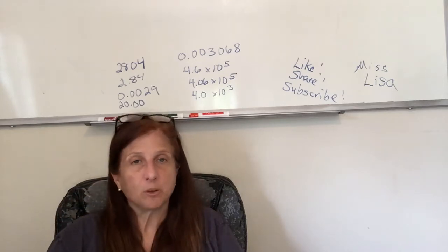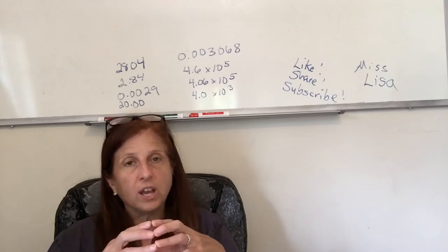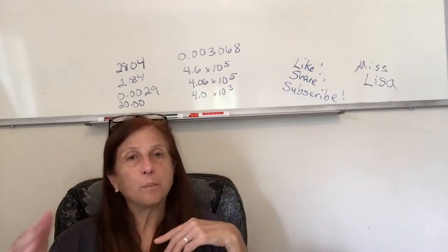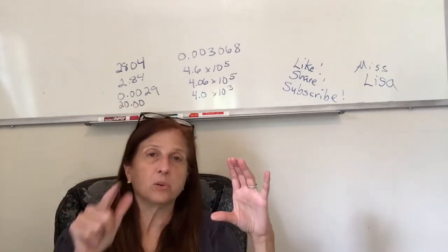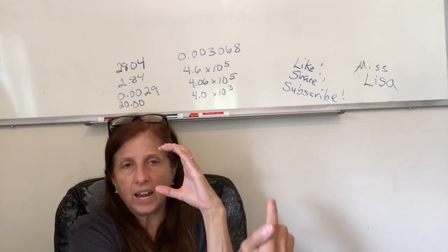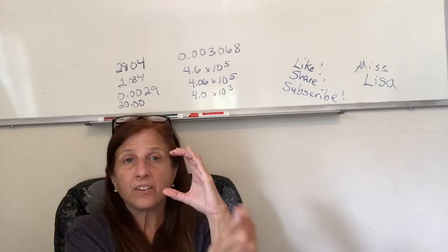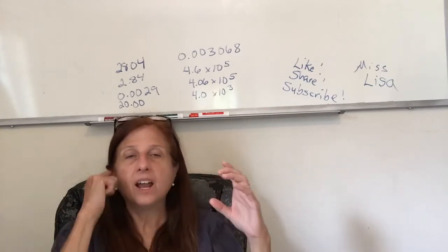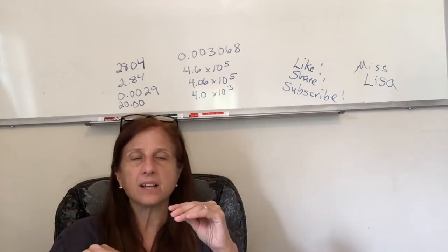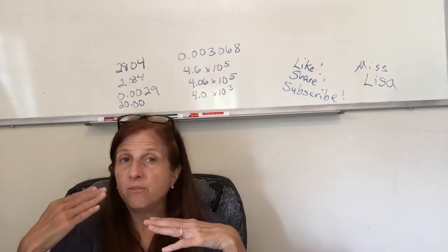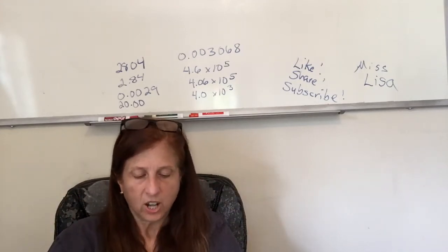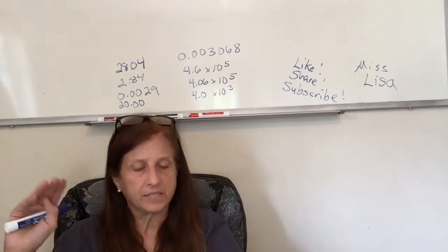Accuracy is how close your measurement is to the truth — we want accurate measurements in science. Precision is how finely stated it is or how repeatable it is. Say I shoot an arrow at a bullseye and three times I hit way over here, nowhere near the bullseye, but I hit the same place every time — that's very precise but not accurate. Or a broken balance that reads to four decimal places is precise but not accurate. In science we strive for both, but accuracy is more important than precision.